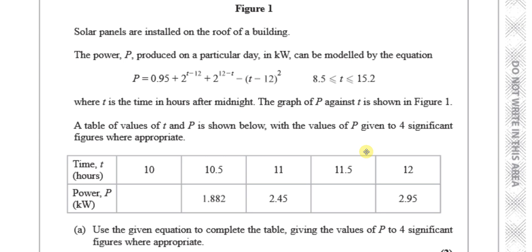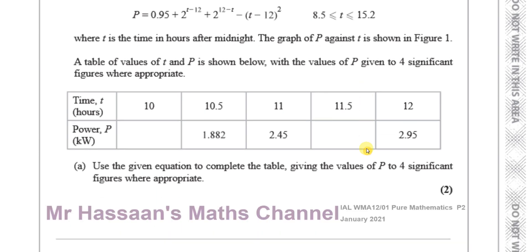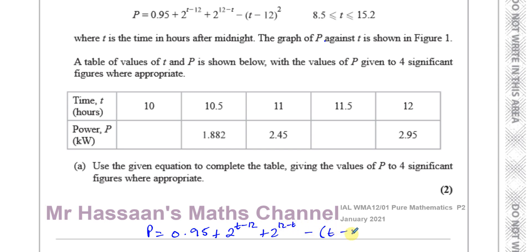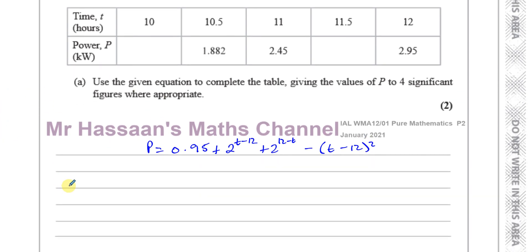So we have our equation: P equals 0.95 times the bracket containing 2 to the power of t minus 12, plus 2 to the power of 12 minus t, minus t minus 12 squared.